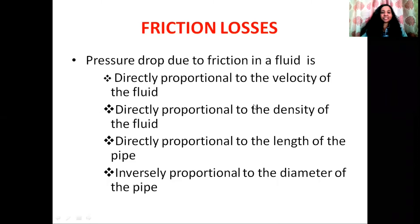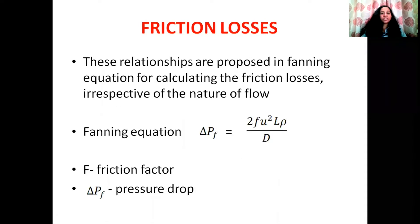All these factors combined into a single expression which is known as the fanning equation. The fanning equation is: delta PF equals 2FU squared L rho divided by D. This equation is used to calculate the friction losses irrespective of the nature of flow.